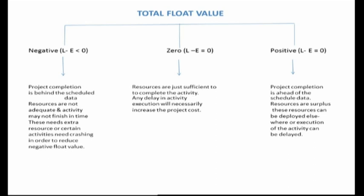When we have a zero float value, it means that resources are just exactly sufficient to complete the activity. Any delay in any activity execution will necessarily increase the project cost. When we have a positive float value, which is when L minus E is greater than zero, it means that the project completion is ahead of the schedule date.